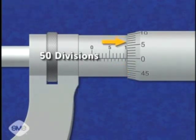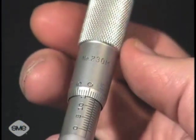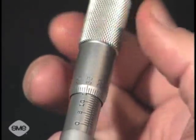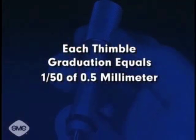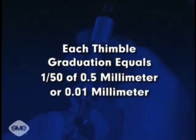The beveled edge of the thimble is graduated into 50 divisions. Since a single revolution of the thimble moves the spindle one half millimeter, each thimble graduation equals one fiftieth of one half millimeter, or one one hundredth of a millimeter.